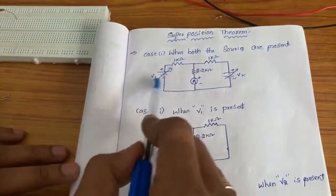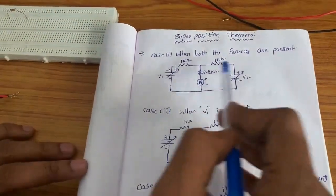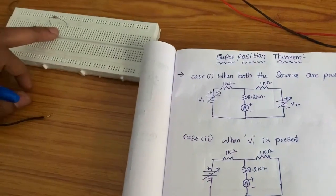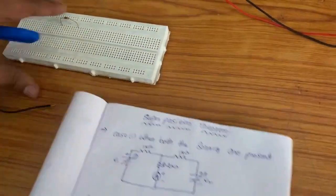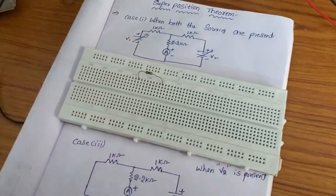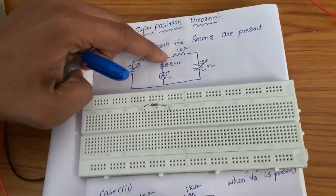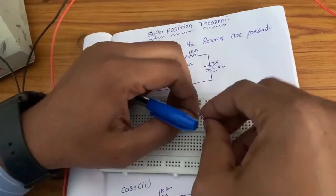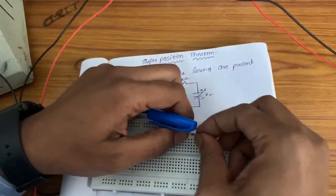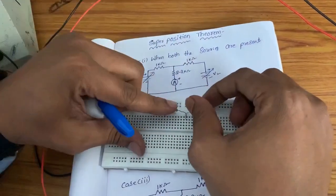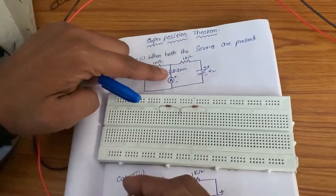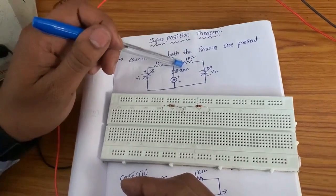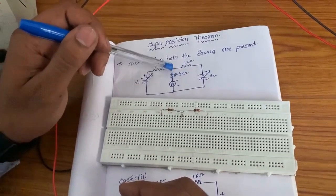For case 1, we have to use two channels — two RPS supplies. First, the 1 kilo ohm resistor is connected here. Its first terminal is connected to this junction point. The second terminal is also connected to a junction point. Now I am connecting the 2.2 kilo ohm resistor here. The 1 kilo ohm second terminal, 1 kilo ohm first terminal, and 2.2 kilo ohm first terminal are all connected to the junction point.